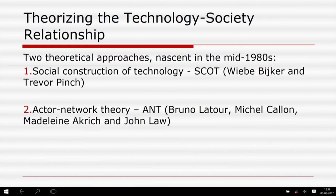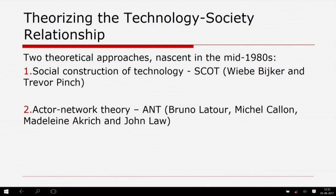MacKenzie and Wajcman note that such a formulation underplays the extent to which technology always involves interaction between human beings and the material world. But they wholeheartedly agree that historians and sociologists of technology should consider the fact that machines work as something to be explained rather than taken for granted. In particular, explanations of success or failure in terms of the intrinsic superiority or inferiority of technologies are suspect because of path dependence — that one type of machine works better may reflect histories of adoption and improvement rather than any unalterable features of the technologies involved.